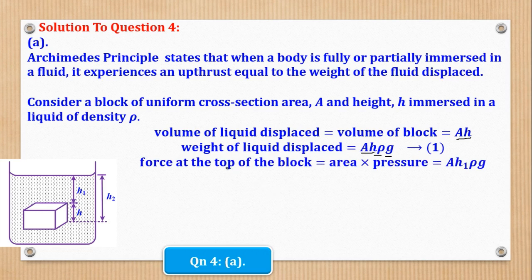We can also get the force on the top of the block. The force on the top of the block acts downwards and is equal to area times pressure. The pressure in liquids depends on the depth, so the depth is H1. Therefore, the force at the top is A·H1·rho·g.